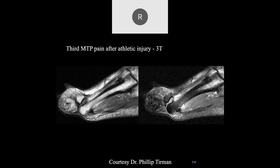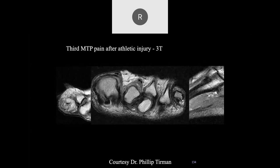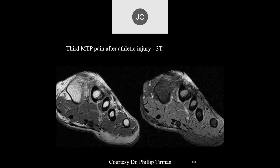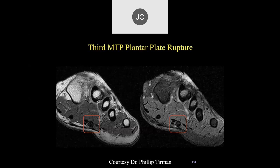Third MTP pain after athletic injury. There's a dorsal dislocation of the proximal phalanx relative to the metatarsal head. On coronal images it again looks dislocated. There's a rupture of the plantar plate at that level, and the flexor tendon is retracted and thickened and tendinotic.